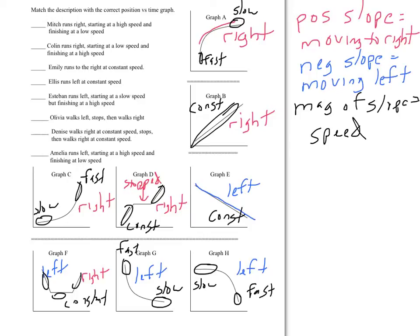If you take all these notes on each graph ahead of time, then the matching part itself is really just a matter of comparing your notes. You've done all the real work. Mitch runs right starting at high speed and finishing at low speed. You're going to look at your graphs for one that is to the right, that starts fast and goes to slow. That's going to be A because it starts fast, goes to slow, and it's going to the right the entire time.